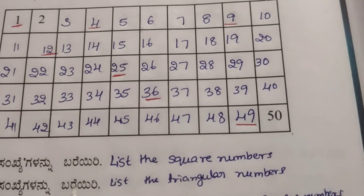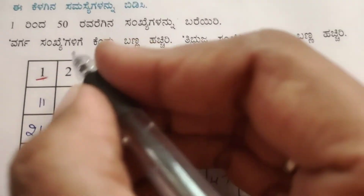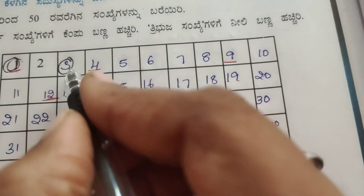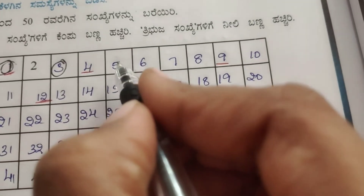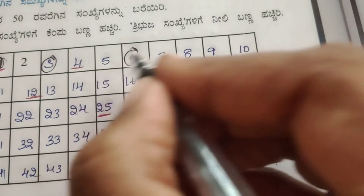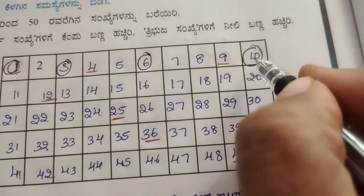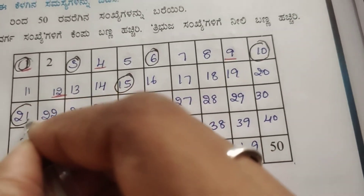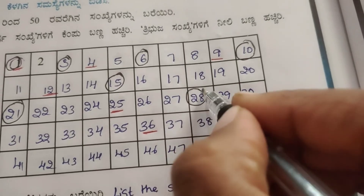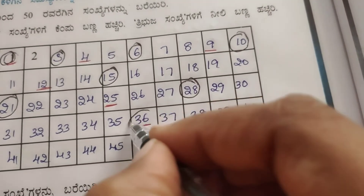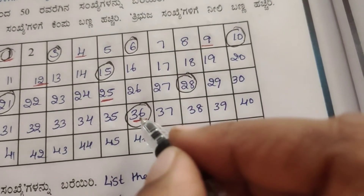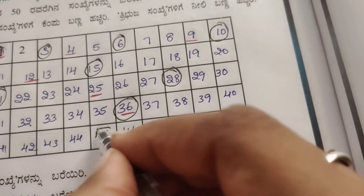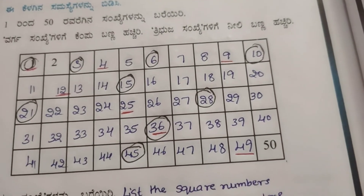List the triangular numbers. Starting: 1, then 1 plus 2 is 3, 3 plus 3 is 6, 6 plus 4 is 10, 10 plus 5 is 15, 15 plus 6 is 21, 21 plus 7 is 28, 28 plus 8 is 36, 36 plus 9 is 45. These are the triangular numbers within 1 to 50.